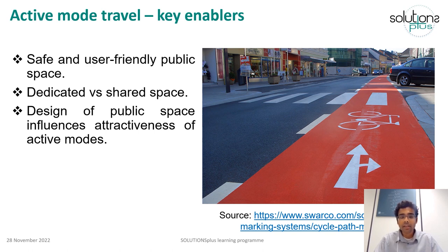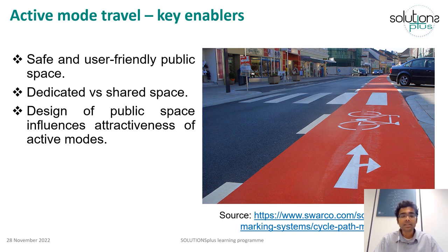For bikes, availability of parking space is a critical issue and it is very important to provide enough parking space at locations of importance where active mode use is expected to become prevalent. Design of street space influences the attractiveness of active modes, hence careful consideration should be given to the design of road space for active mode travel. Their attractiveness can further be improved by providing them with signal priority at important junctions.